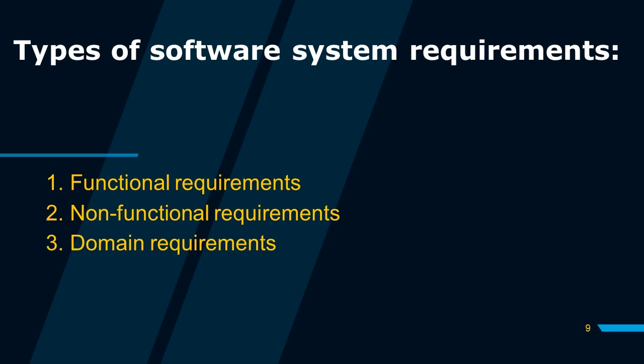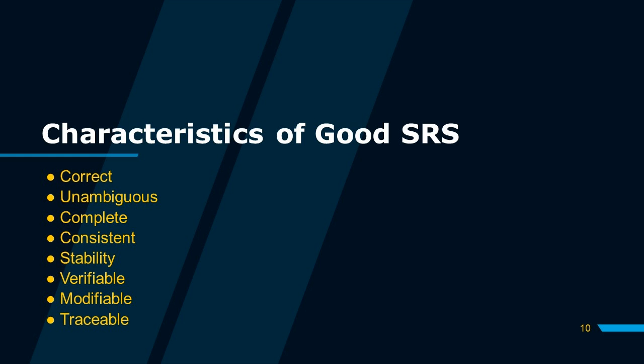The third type of software system requirements is domain requirements. These can be either functional or non-functional and reflect the particularities of the application domain. Domain requirements indicate specific computations, additional functionality, or constraints on other requirements.